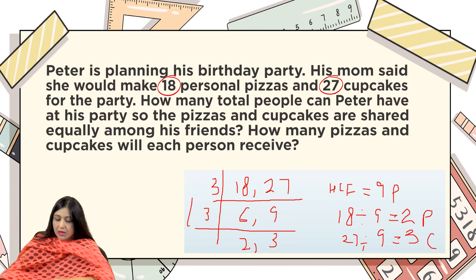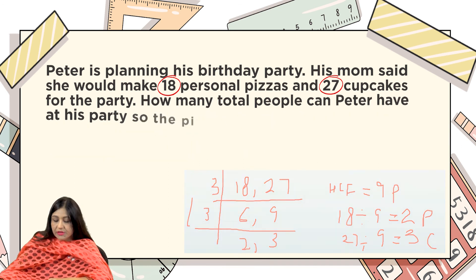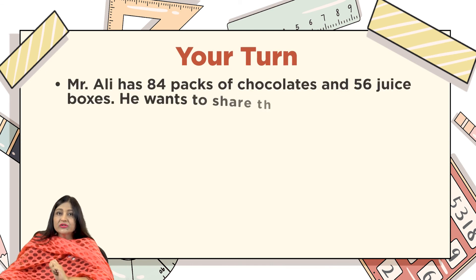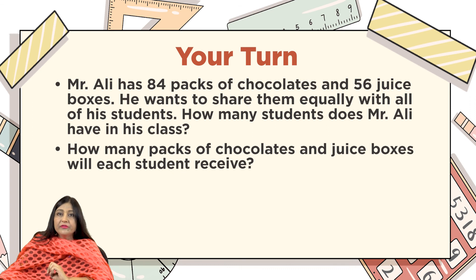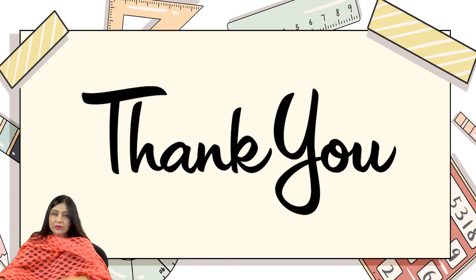This is how you solve HCF-type problem sums by looking at the hint words in the question: 'shared equally,' 'no leftover,' 'highest,' or 'greatest' — these indicate HCF questions. Now it's your turn. Mr. Ali has 84 packs of chocolates and 56 juice boxes. He wants to share them equally with all his friends. How many students does Mr. Ali have in his class, and how many packs of chocolates and juice boxes will each student receive? I hope you liked my video — thank you so much!